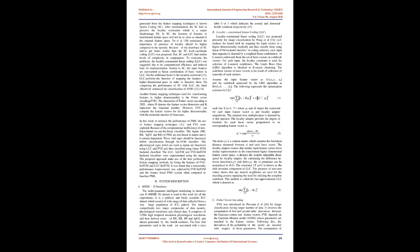LLC performs the function of mapping features to a higher dimensional space to linearize them, and comparing its performance with sparse coding shows it effectively enhances SVM classification. Another feature mapping technique used for transforming features to higher dimensionality is Fisher Vector Encoding, FVE. The dimension of FVE is 2KD, where D denotes the feature vector dimension and K represents the Gaussian number. FVE can compute feature vectors for higher dimensionality with a minimum number of Gaussians. In this work, to enhance the performance of PMS, the use of feature mapping techniques LLC and FVE were explored. The inputs HR, RR, SpO2, and BP of PMS are nonlinear and patient-dependent, and must be linearized before classification through a linear SVM classifier.